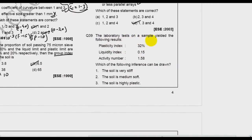The laboratory test on a sample yields the following results. Plasticity index 32 percent, liquidity index 0.15, activity number is 1.58. Which of the following inference can be drawn? The soil is very stiff, the soil is medium, the soil is highly plastic. So whenever you have to find the condition of the soil, always concentrate on this value. I will give you one table to understand this.